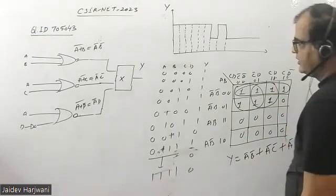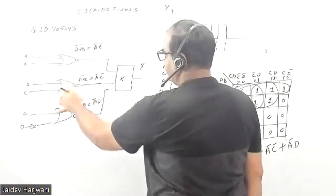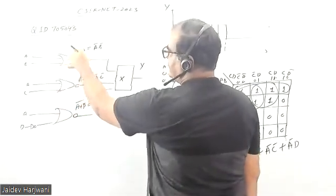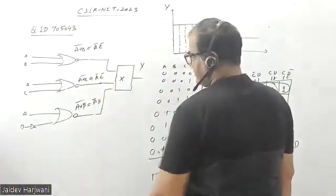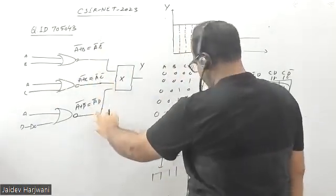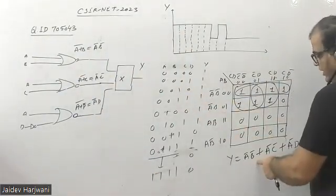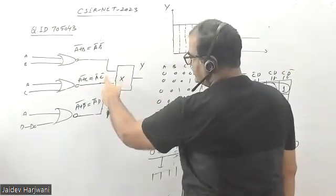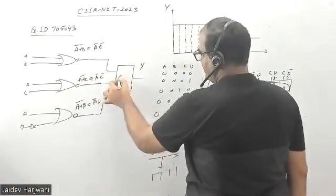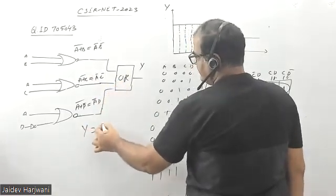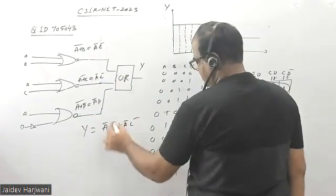Now let us compare with the circuit. These are NOR gates, so A and B into a NOR gate gives you (A+B)-bar, which is equivalent to A-bar B-bar. Similarly, the next gate is equivalent to A-bar C-bar, and the next to A-bar D. Comparing terms, they are the same. Now you need to OR these terms together, so your X should be an OR gate.